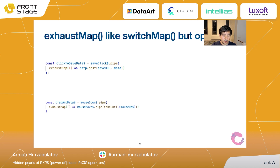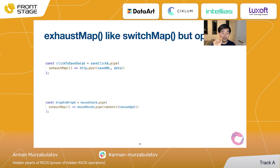Another example of `exhaustMap` is drag and drop. When we click the mouse, it starts listening for mouse movements. Once we click, it listens to mouse movements, and here we have `takeUntil` so we listen to mouse movements until we release the mouse — that's the mouse-up event. This is a simplified implementation of drag and drop using RxJS.